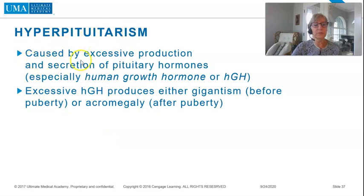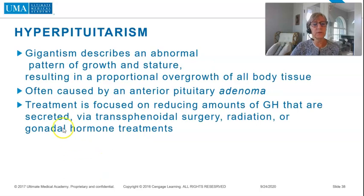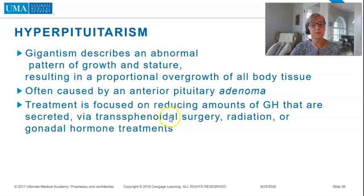Hyperpituitarism is caused by excessive production and secretion of pituitary hormones, especially human growth hormone (HGH). Excessive HGH produces either gigantism before puberty or acromegaly after puberty. Gigantism describes an abnormal pattern of growth and stature resulting in proportional overgrowth of all body tissues, often caused by an anterior pituitary adenoma. Treatment is focused on reducing amounts of GH secreted via transsphenoidal surgery, radiation, or gonadal hormone treatment.